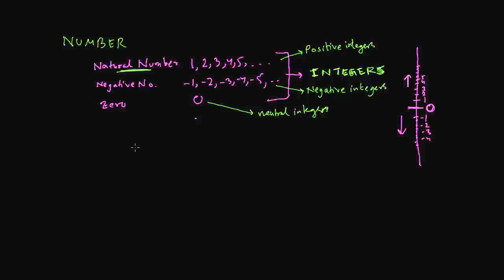The first and most important concept of numbers is natural numbers, and then we have to talk about integers. When the concept of integers came, positive integers are the same as natural numbers. Now, as we are talking about integers, we need to categorize integers.